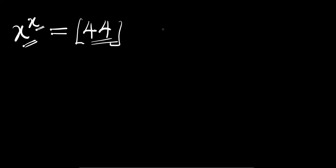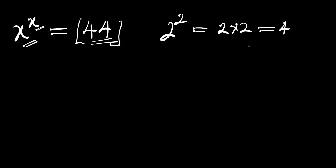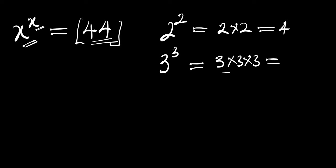Let's start with the smallest number — let's try 2. If you have 2 to the power of 2, this simply means 2 times 2, and this is 4. Let's proceed to 3. 3 to the power of 3 simply means 3 times 3 times 3. 3 times 3 is 9, and 9 times 3 is 27. But 27 is less than 44.